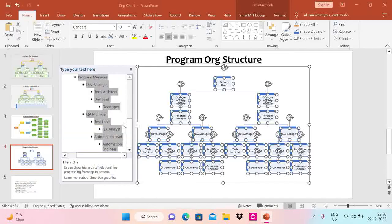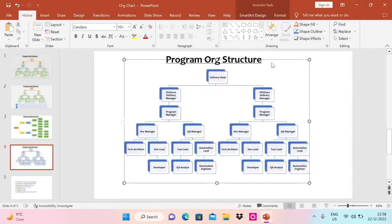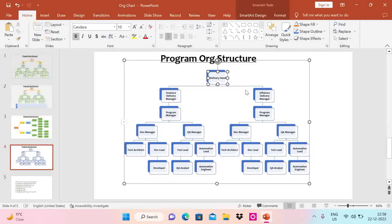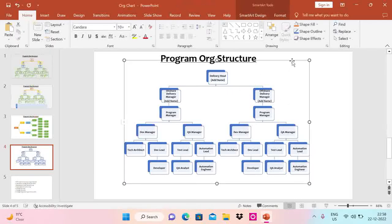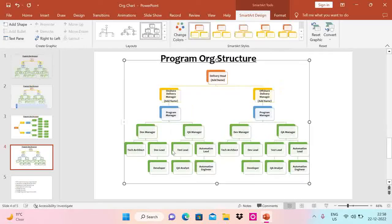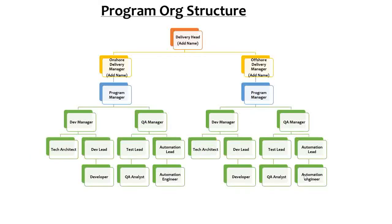If you want to bold something, select it and do Ctrl+B. You can also increase the size as needed. To add a person's name, just press Enter after the role and type the name — that flexibility is there to type and customize. Now if you double-click on the SmartArt, you'll see Change Color options. There are several options to pick from. Let's say I choose this one — you can see the color changes at every layer of the hierarchy.